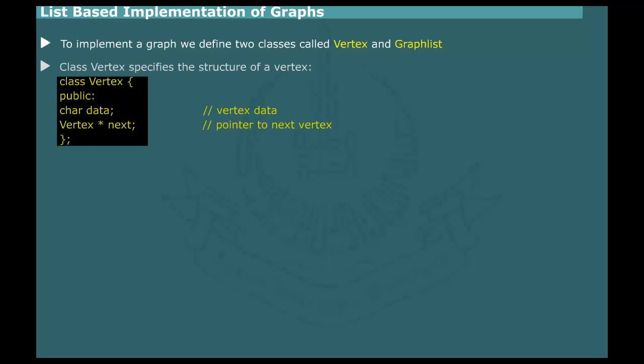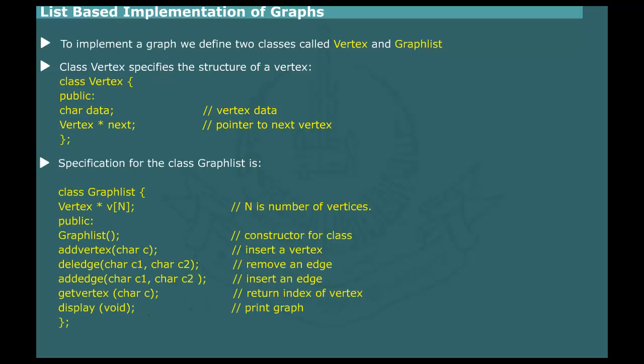The class Vertex specifies the structure of a vertex. The specification for the class GraphList is shown in figure. It is composed of an array of pointer V, which stores head pointers for each of the Link Lists, and it includes the following methods.